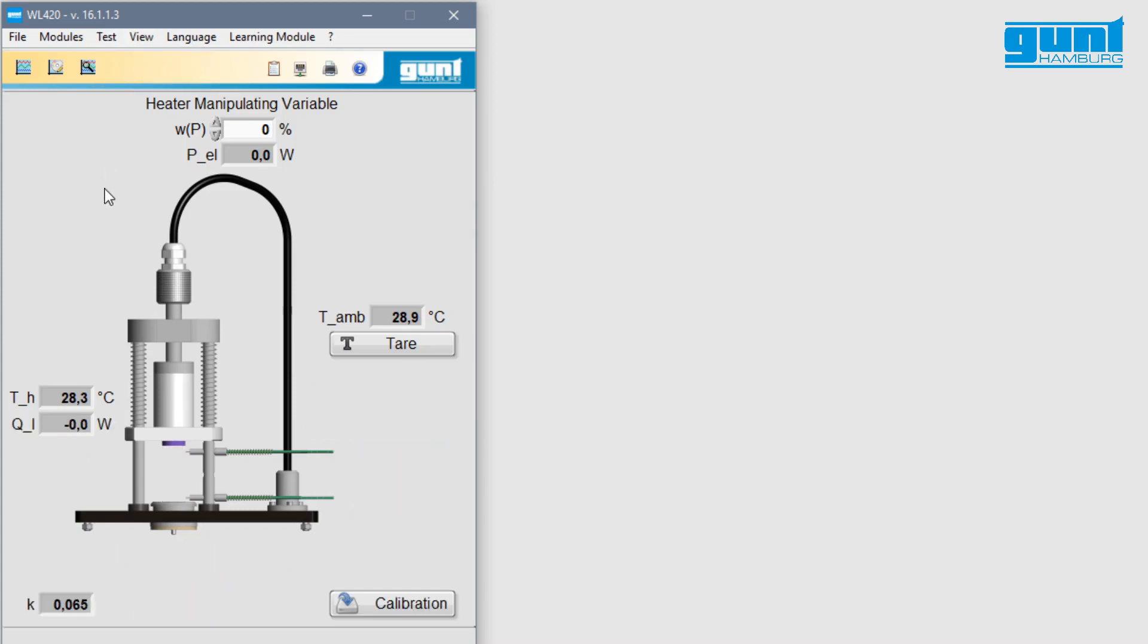The next step is to tare the sensors. This is done to compensate for any slight measuring errors or inaccuracies between the sensors. As you can see here, the temperatures shown are slightly different. By pressing the tare button, the values for the temperature measurements are numerically equalized and show, for the moment at least, the same value. The tare function should only be carried out after the unit has completely assumed ambient temperature and when possible in an environment without any disturbances.